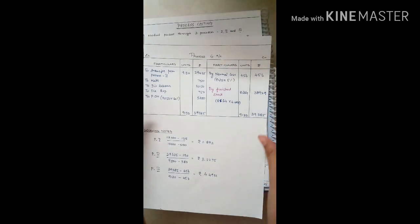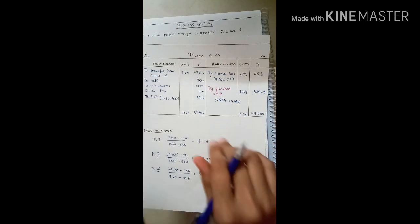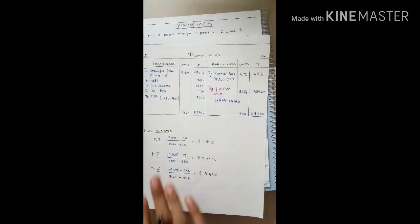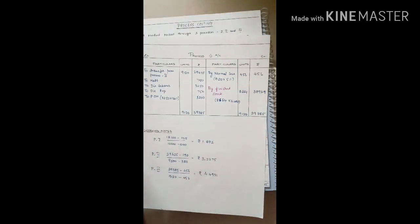This is the way you proceed with a process costing problem — starting with process one, then process two, then process three. At the end, you find the cost per unit of the output. Thank you.